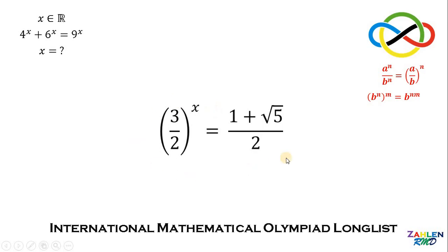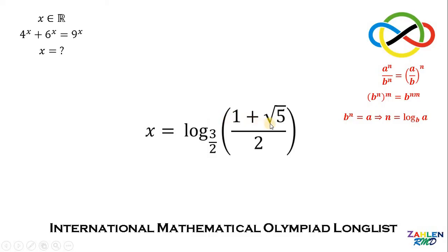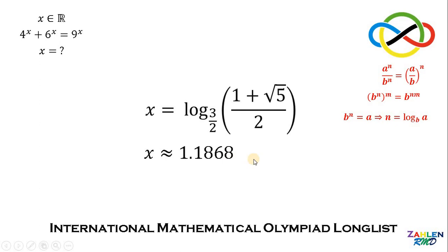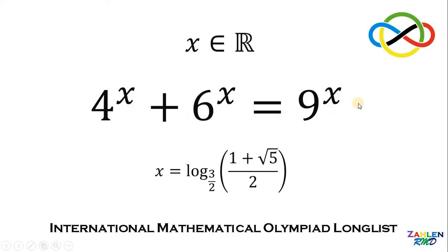Our goal is to solve for the value of x. If we have an exponential equation b raised to n equals a, it can be converted into the logarithmic equation n equals logarithm of a to the base b. Therefore this equation can be written as x equals logarithm of 1 plus square root of 5 over 2, to the base of 3 over 2, which is approximately equal to 1.1868. Therefore the value of x in the equation 4 raised to x plus 6 raised to x equals 9 raised to x is the logarithm of 1 plus square root of 5 over 2, to the base of 3 over 2, and we are done.